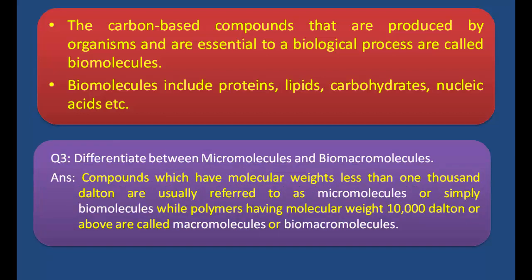Question No. 3: Differentiate between Micromolecules and Biomacromolecules. Answer: Compounds which have molecular weights less than 1000 Dalton are usually referred to as Micromolecules or simply biomolecules, while polymers having molecular weight 10,000 Dalton or above are called macromolecules or biomacromolecules. Compounds with molecular weight less than 1000 Dalton are called micromolecules, while compounds with molecular weight 10,000 Dalton or more are called macromolecules or biomacromolecules.